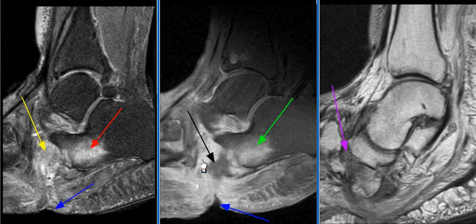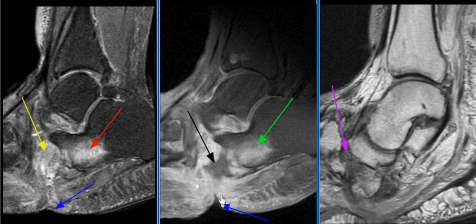There is absence of the cuboid, which may be due to debridement or osseous destruction. A soft tissue ulcer is seen along the plantar aspect of the midfoot, extending into the expected location of the cuboid.